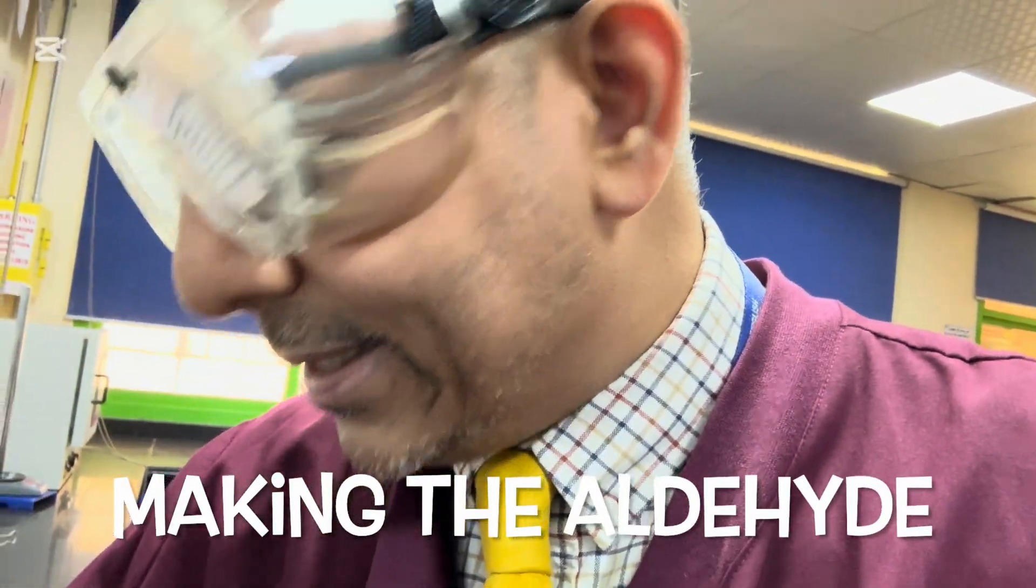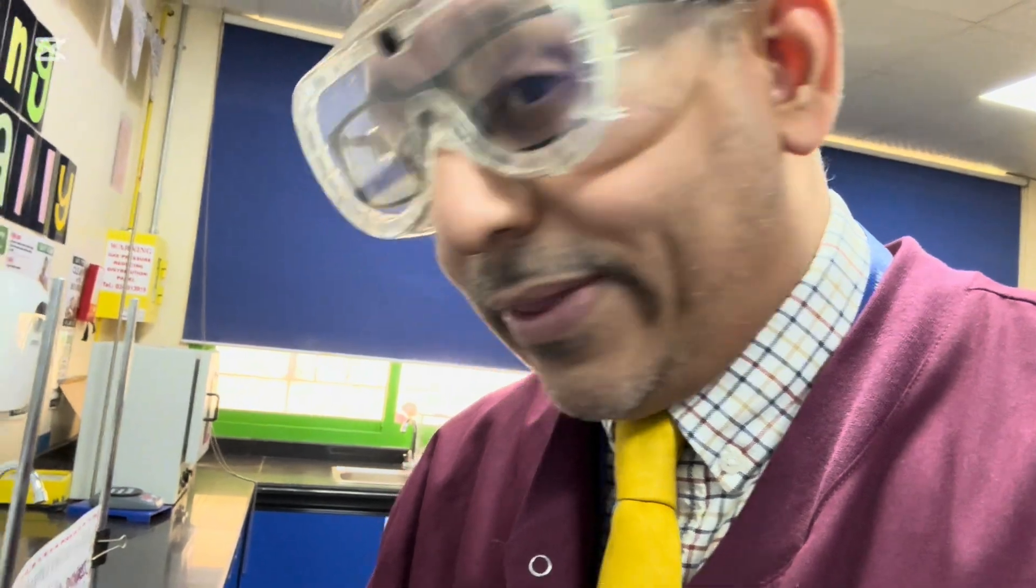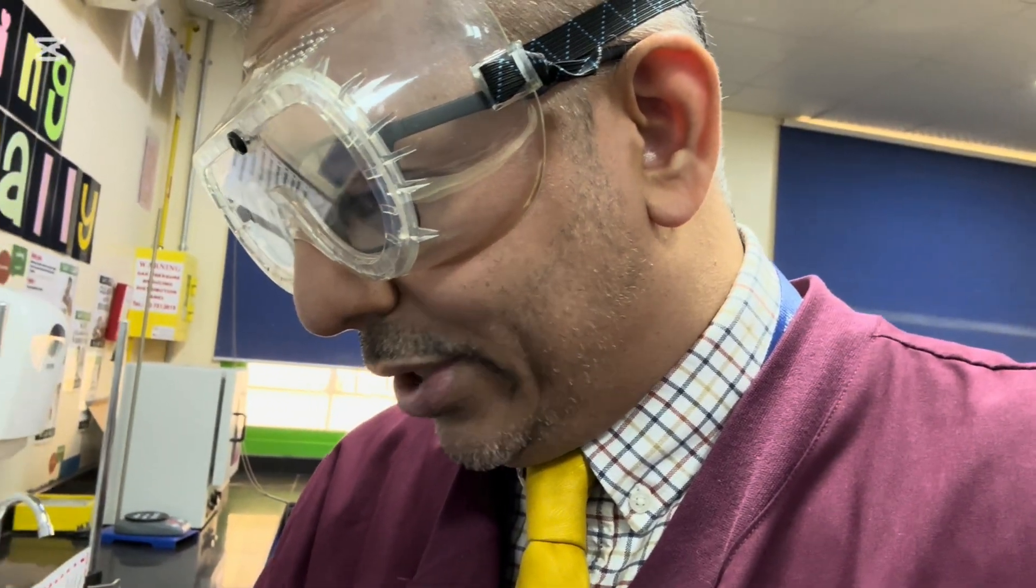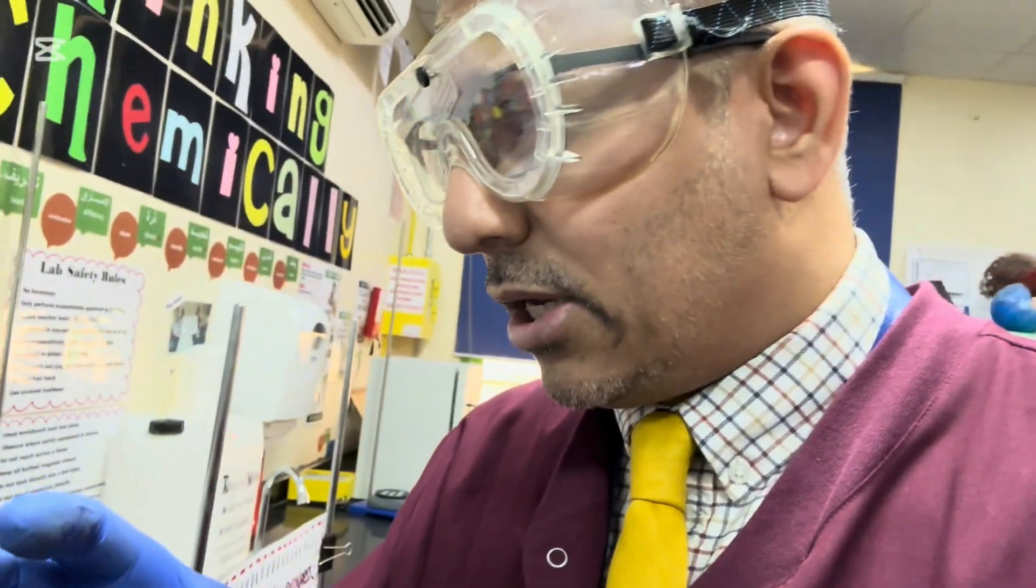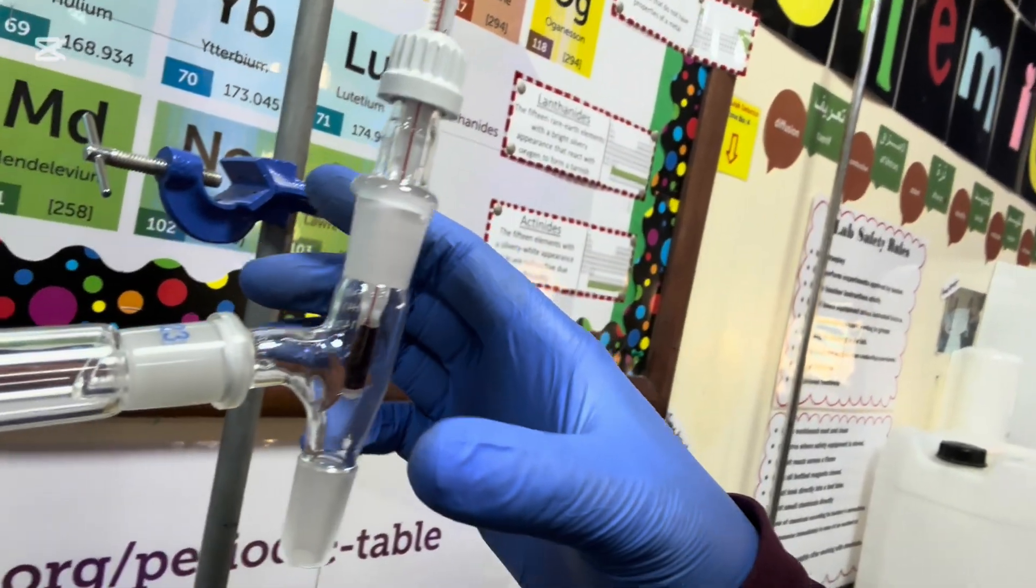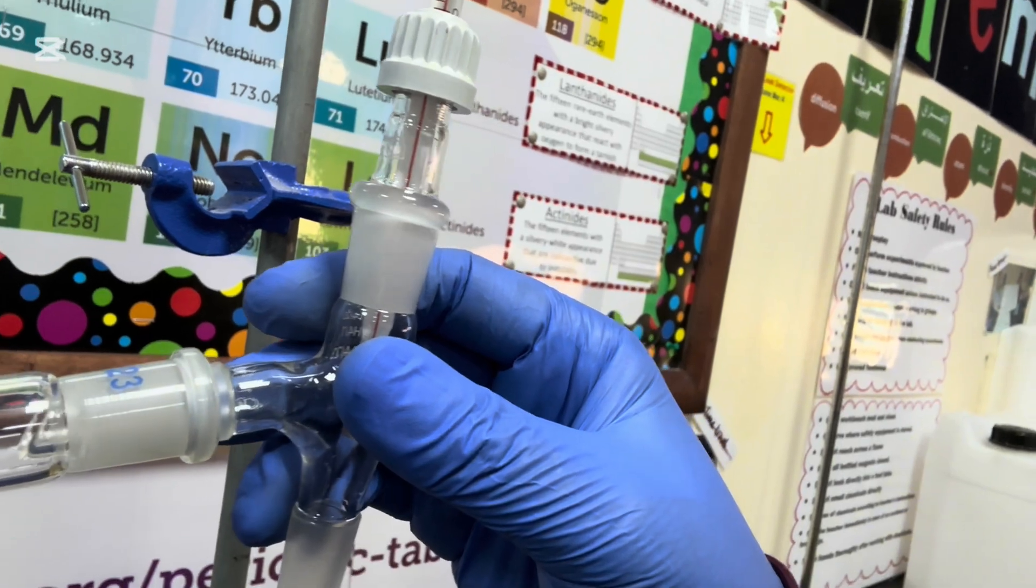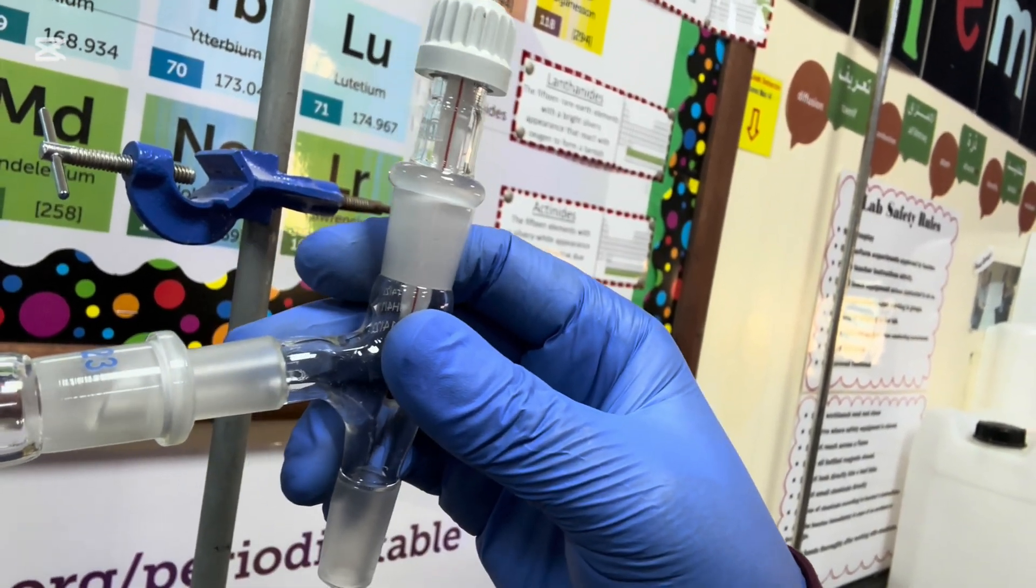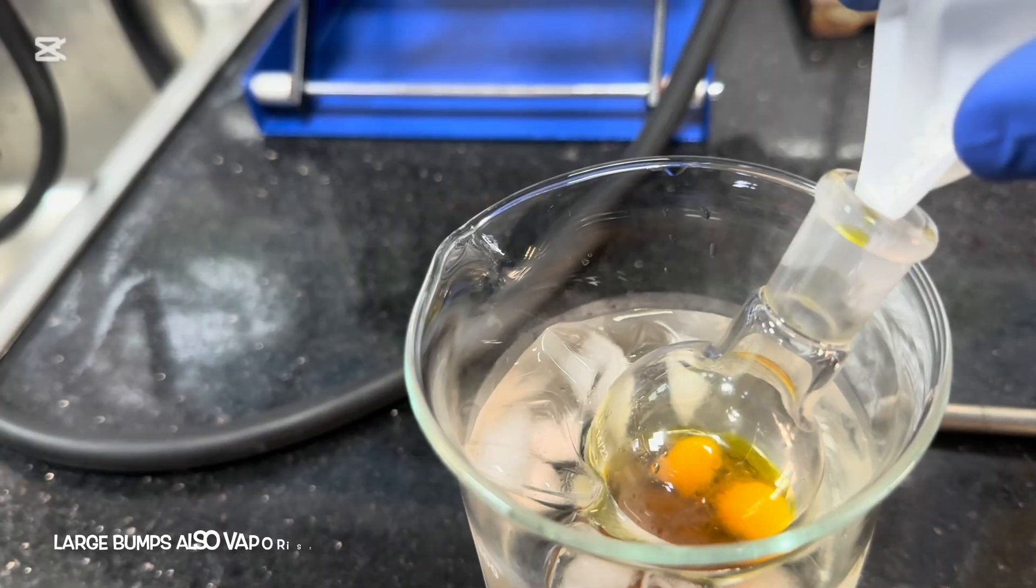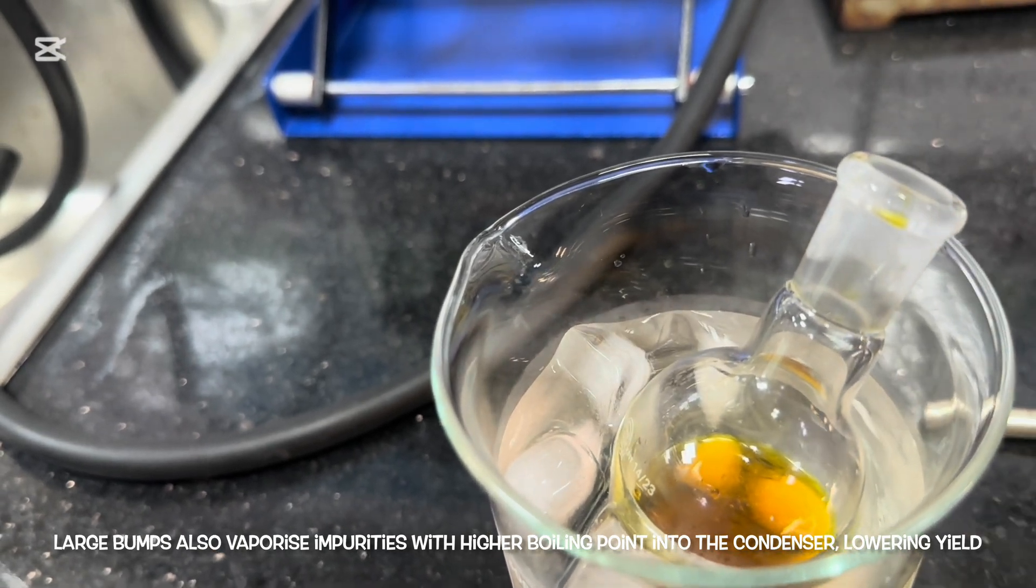I'm going to now add some anti-bumping granules. If I was to try and attempt the distillation without the anti-bumping granules, then what would happen would be that you would get large bubbles forming, and the entire distillation apparatus would just shudder. So if you have large shudders, these can become quite loose, and if they become loose, any vapors that you have traveling through the apparatus could escape and you lose your product. So these are inert. They don't react with any of the reactants that we're going to be using today.